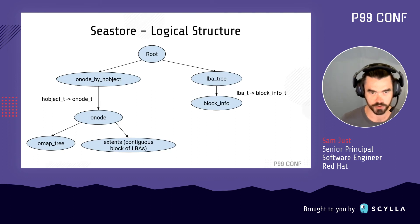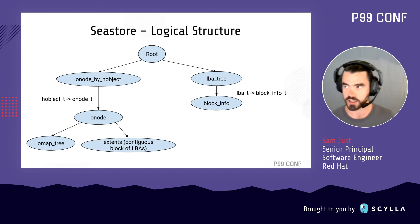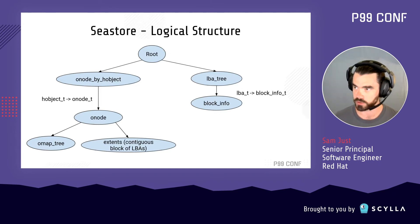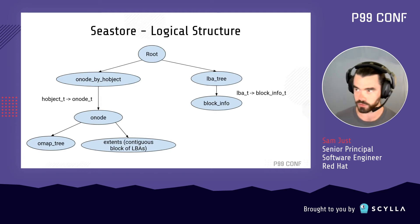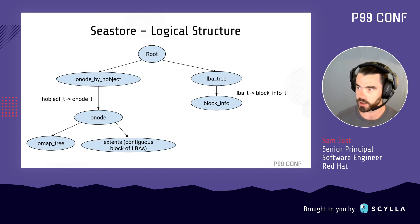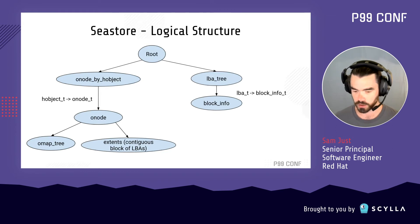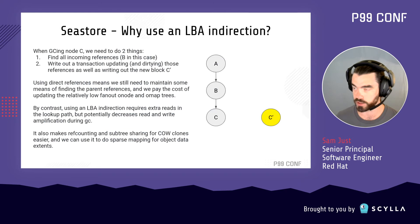Now let's talk about the design and architecture of C-Store. At a very high level, C-Store is a tree, and each core gets its own root. On the left side, we have a mapping from GH objects — which are the object names — to O nodes, which are the internal structures responsible for allocation and locating information. Everything on the left side of the tree from the O node map to the actual data extents is addressed using logical addresses, which are mapped by the right side of the tree, the LBA tree, onto actual physical offsets.